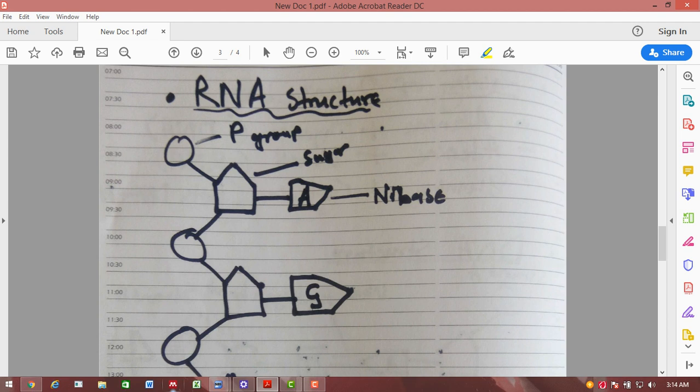Remember this is the RNA structure. Adenine will always pair with uracil instead of thymine, and guanine will always pair with cytosine.